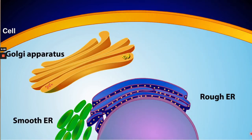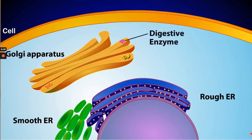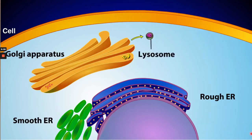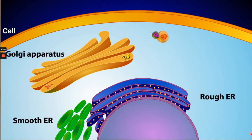For example, some of the proteins from the rough ER are modified by the Golgi apparatus to become digestive enzymes, which are packaged into a special type of vesicle called a lysosome. The lysosome fuses with another vesicle coming in from the plasma membrane, and its digestive enzymes then break down the contents of the vesicle, releasing nutrients for the cell.